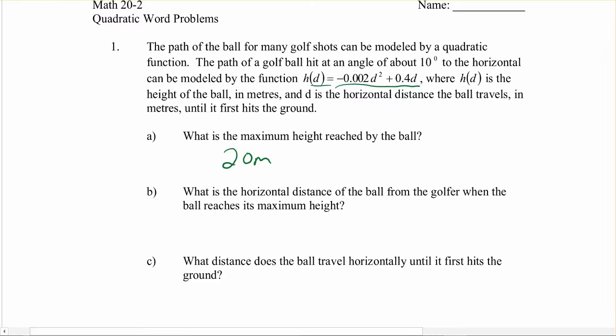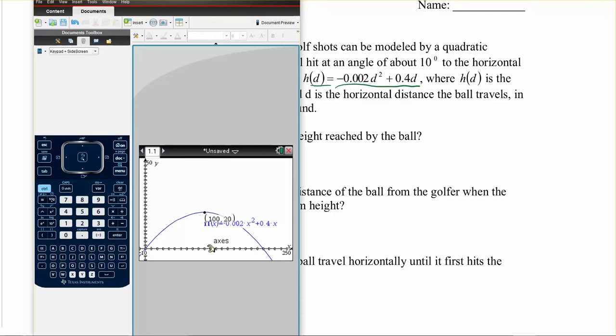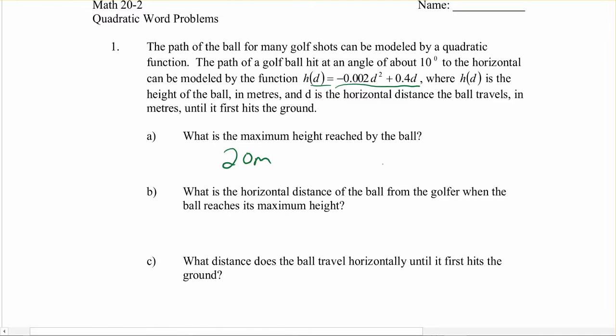What's the horizontal distance of the ball from the golfer when the ball reaches its maximum height? So it's just saying how far over will this thing go when it gets to its very top? So it's really just looking for that number now. So right at the vertex, that's 100. So it's going to go over to 100 right there. So it's going to be at 100 meters.